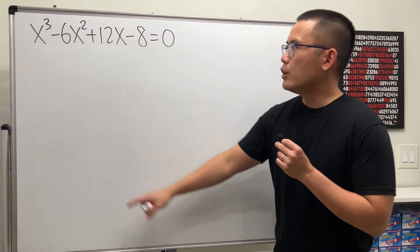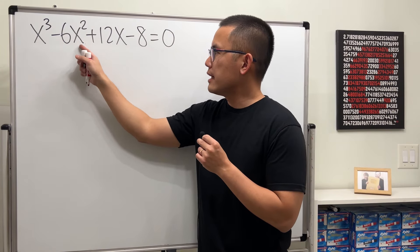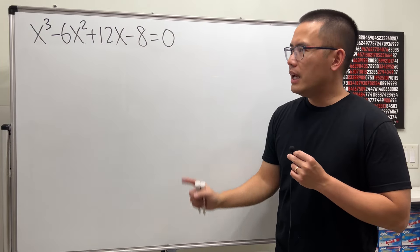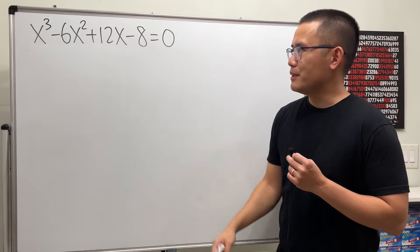Today, let's solve this cubic equation. We have x cubed minus 6x squared plus 12x minus 8 equals 0. And you will see something really interesting about this equation.